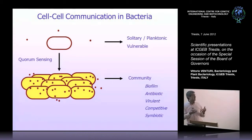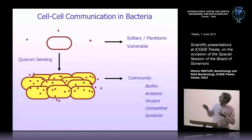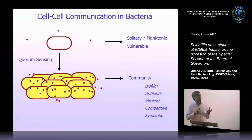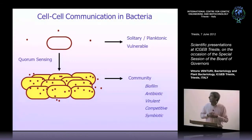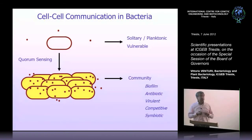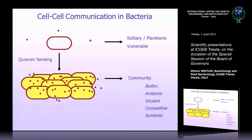What we have realized is that bacteria, when they are solitary or in low numbers, are extremely vulnerable to all kinds of stresses — be it biotic or abiotic, like excessive heat or lack of water. They are very vulnerable; they die. Whereas communities are strong — much more resistant to all kinds of stresses and also much more competitive.